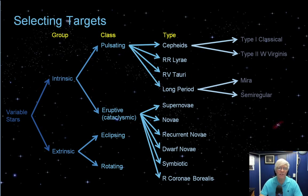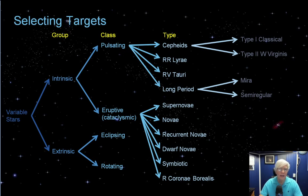Before you select what kind of variable stars you want to observe, consider there are over 200 kinds. Variable stars are categorized into groups, then classes, then types, with a few subtypes as well. A few of the types are broken out in recognition of their additional characteristics and properties. I'll be showing you a resource to read up on the differences between variable stars in a moment.